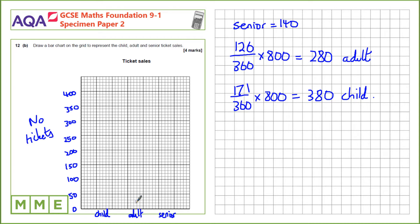Next, we need to plot in our bars. So the child one is going to be up at 380, which is here. The adult one is going to be up at 280, which is here. And then the seniors go to 140, which is here. Finally, we just need to put in our full bars.